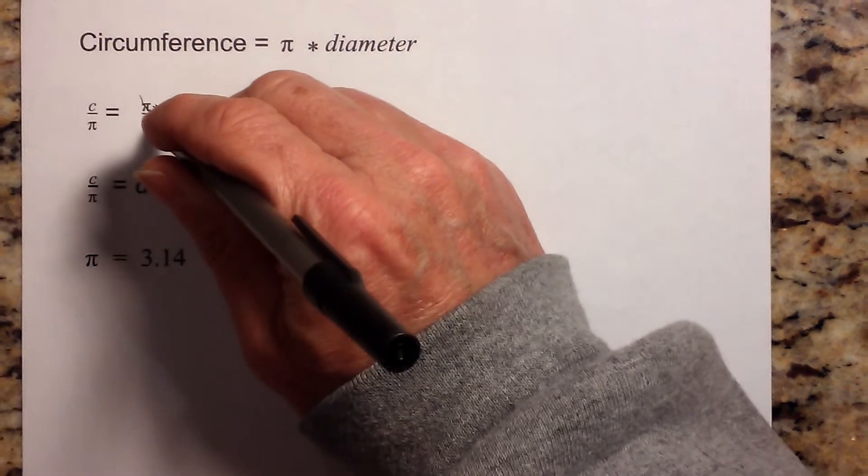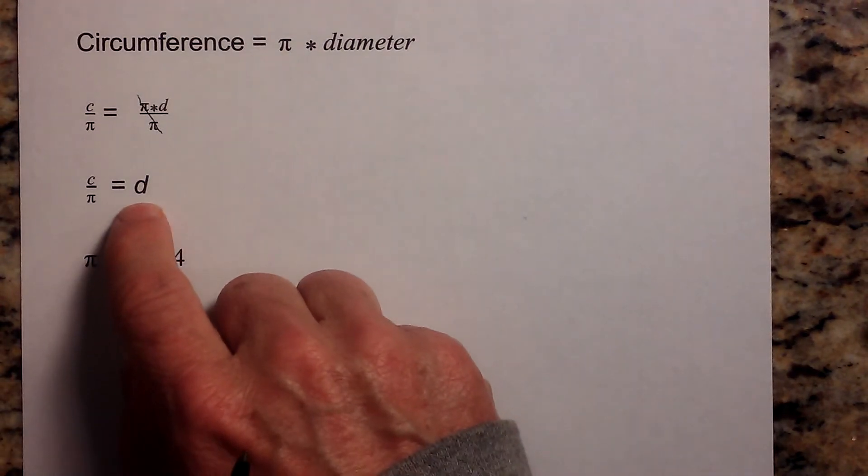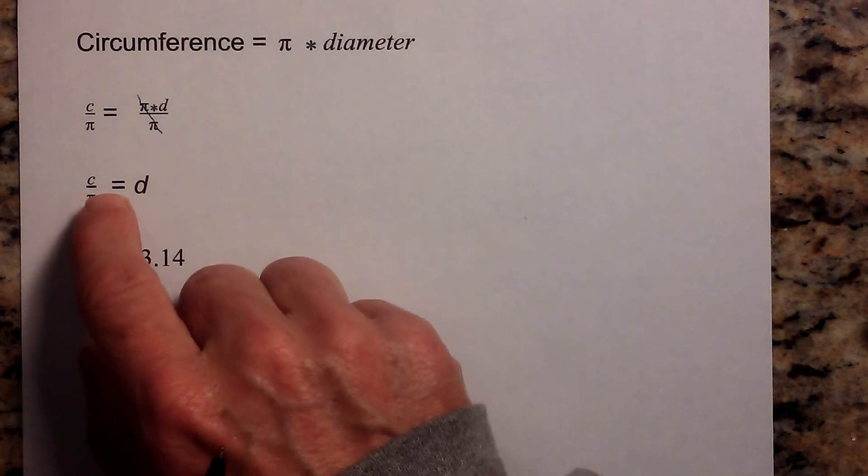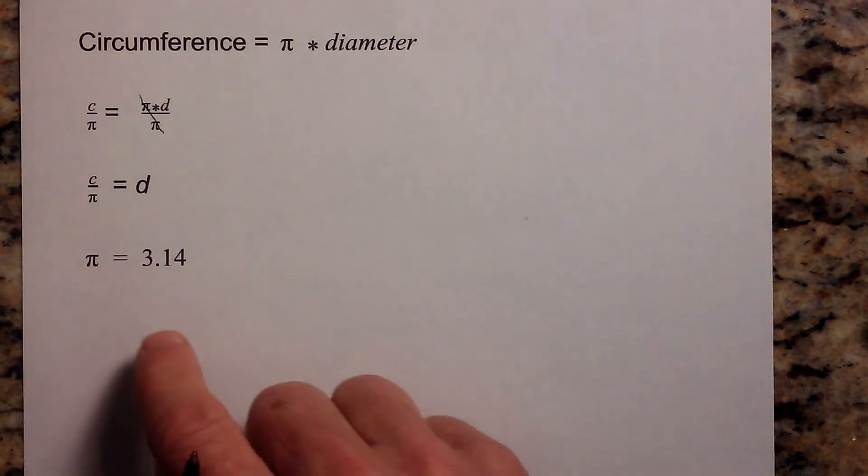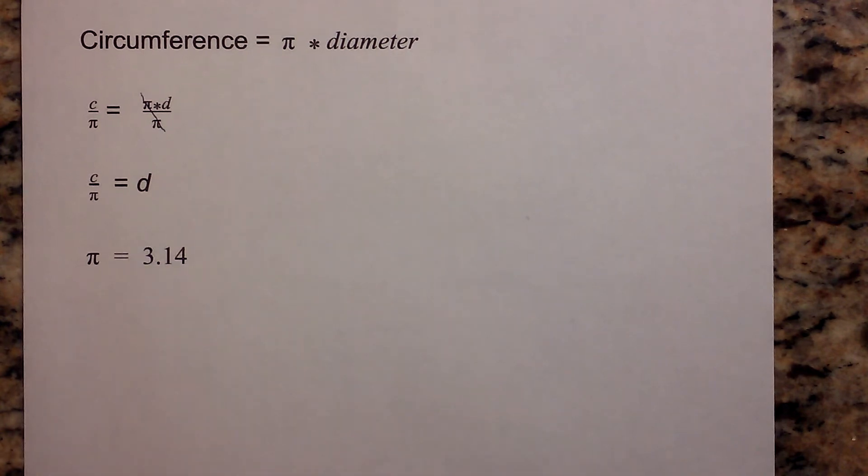So when we divide both sides by pi, this pi cancels and we are left with diameter is equal to circumference divided by pi.